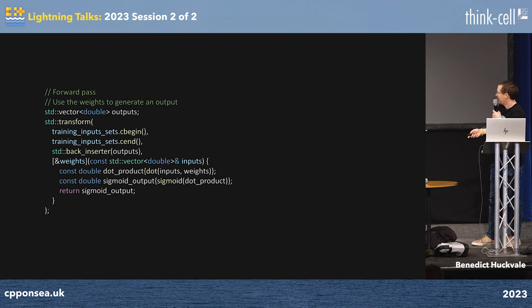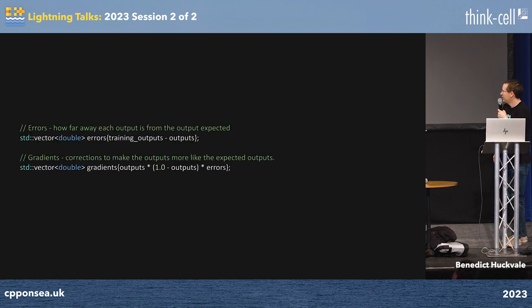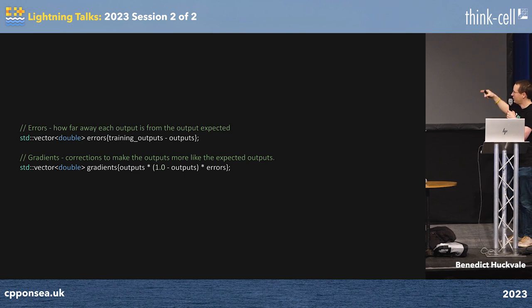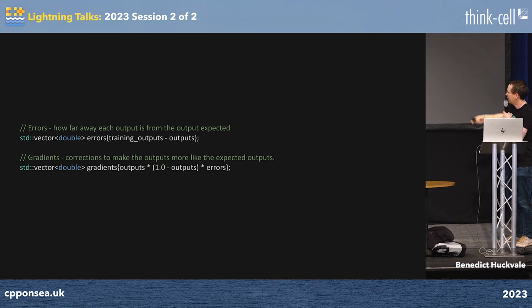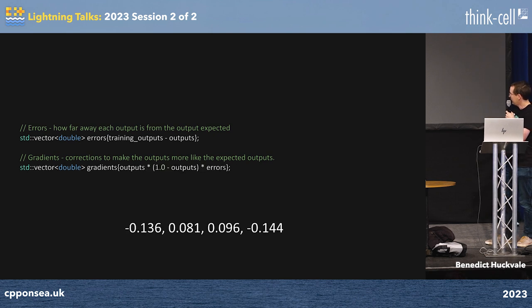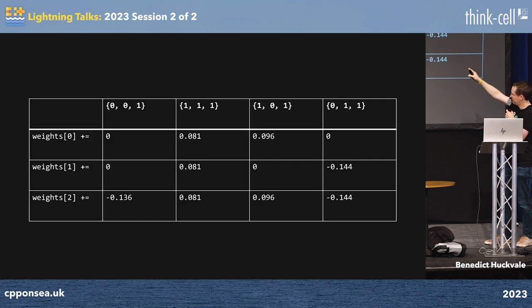There's a transform there doing some stuff with the sigmoid function. Next, you have to work out how wrong your output was — you just calculated from the training input — and use that to fix the weights you just used. So it's like an iterative thing, and there's that gradient of the sigmoid in the gradients calculation. You end up with these weights at the end — the first weight is very heavily weighted and the other two sort of take it down, subtracting away from the second two inputs.